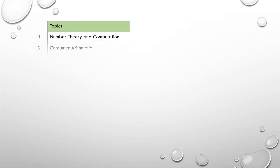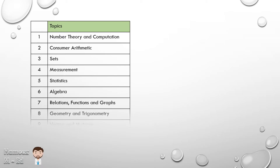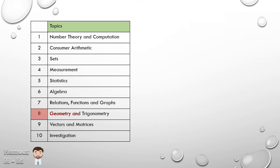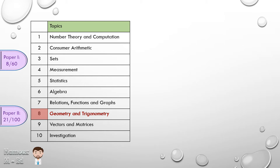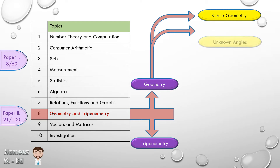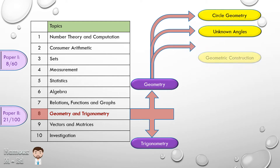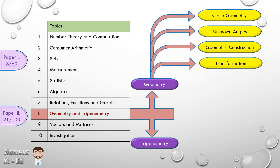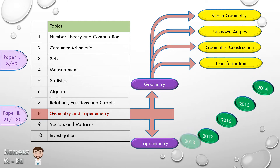Let's recall the 10 major topics in CSEC mathematics and we'll be looking at topic number eight, geometry and trigonometry, which comes for eight questions in the multiple choice in paper one and 21 marks out of the possible hundred in paper two. This topic can be split into two parts: geometry and trigonometry. Geometry itself can be further subdivided into circle geometry, parallel lines or unknown angles, geometric construction and transformation. In this video we'll be looking at transformation and the five questions that came in the years from 2014, 15, 16, 17 and 18.